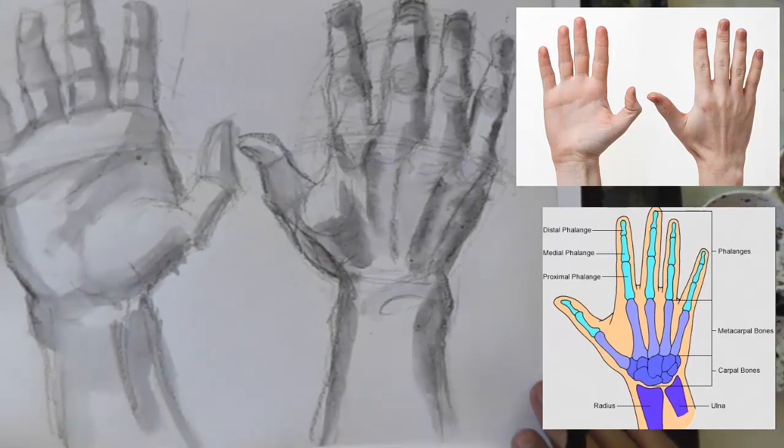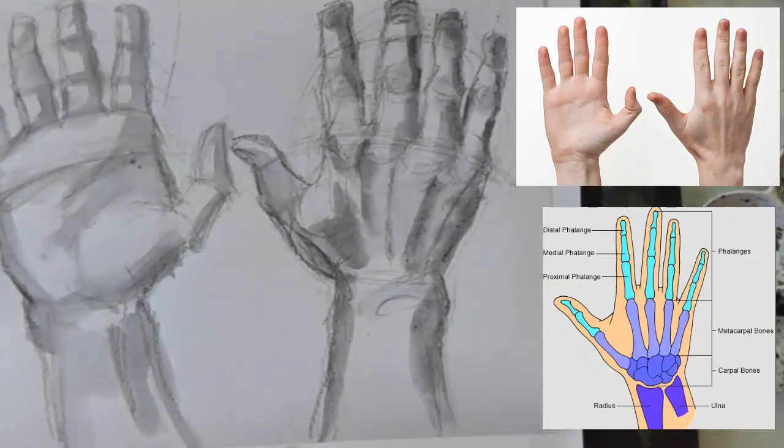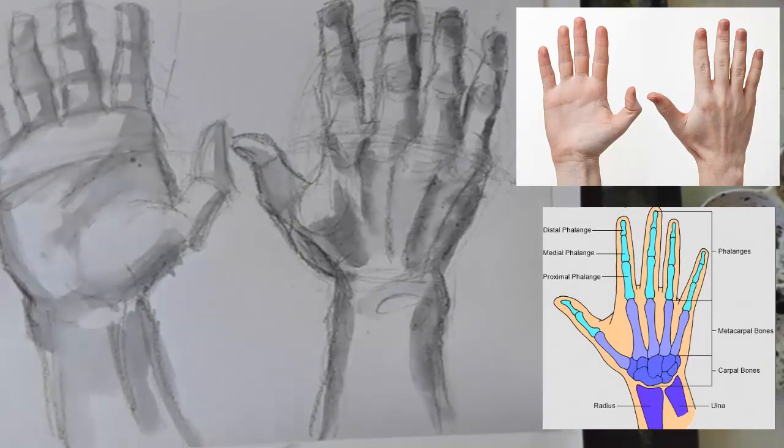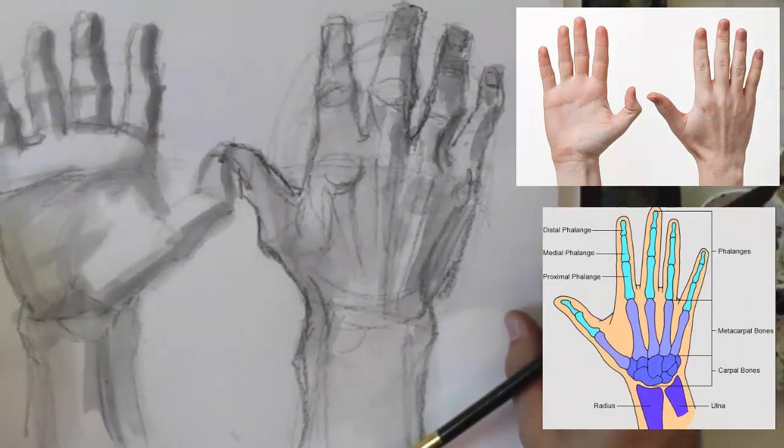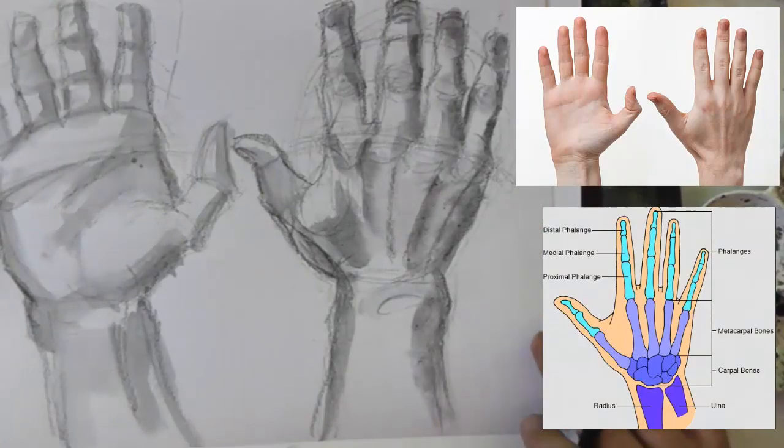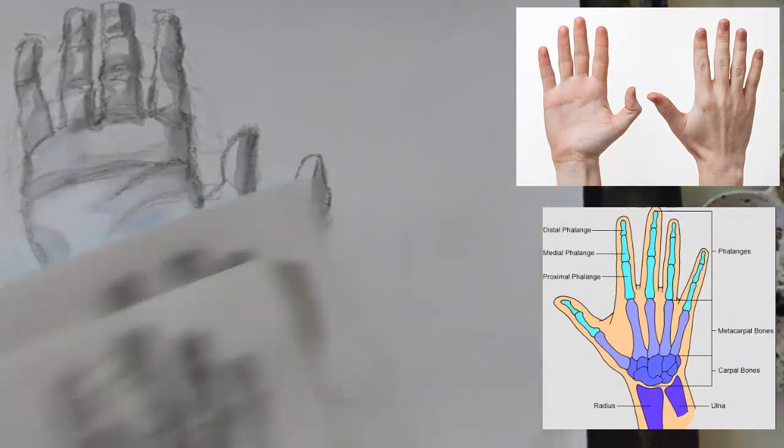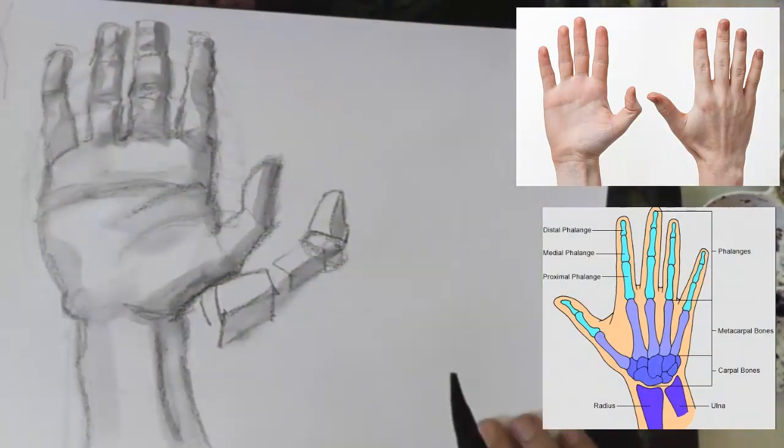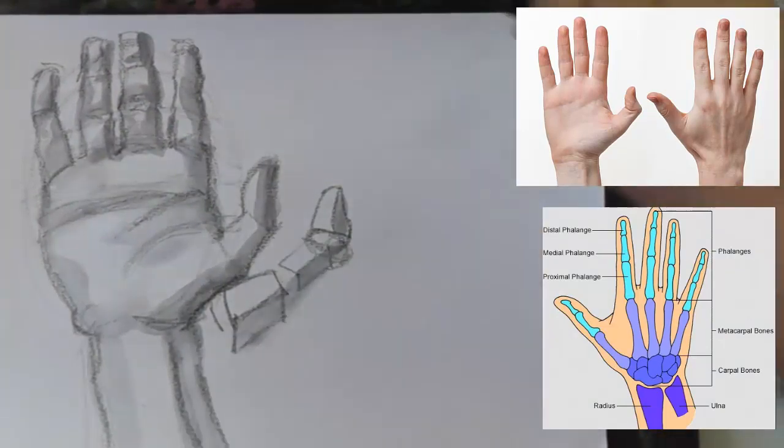And there you have the front and the back of the hand using the system of ovals. And you can see that you can get pretty consistent results doing this stuff if you practice a lot. Thanks for watching.